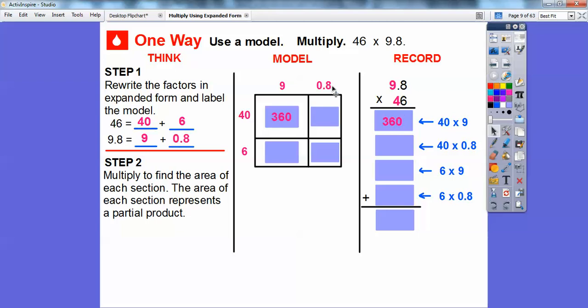Let's do 40 times 0.8. I kind of did this over here. 4 times 8 we know is 32. So 40 times 8 is 320. So if we go backwards, 40 times 0.8, it goes back to 32. This area is equal to 32. 6 times 9 is 54. Let's plug that in right there. And then 6 times 0.8. 6 times 8 is 48. So 6 times 0.8 is 4.8.